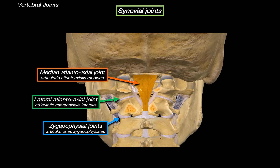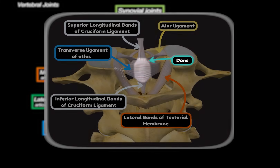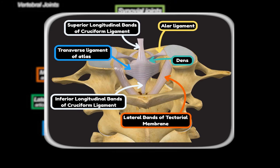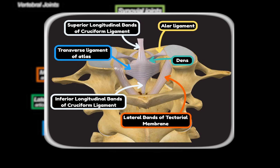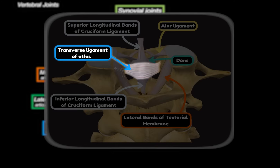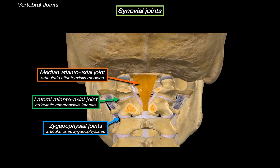The median atlantoaxial joint is a pivot-type synovial joint between the dens of the axis and the anterior arch of the atlas. The dens acts like a pivot, allowing the head to rotate from side to side — like shaking your head. This joint is stabilized by strong ligaments, most importantly the transverse ligament of the atlas, which holds the dens tightly against the anterior arch. Damage to this ligament from trauma or diseases like rheumatoid arthritis can cause instability and even life-threatening spinal cord compression.